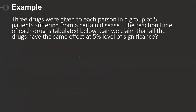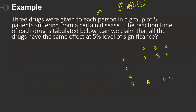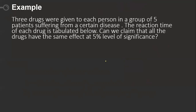Example: Three drugs A, B, C were given to each of five patients. I give drug A, drug B, and drug C to person 1, then person 2, through person 5. Their reaction time for each drug is tabulated. We need to test whether all drugs have the same effect in terms of reaction time at 5% level of significance.